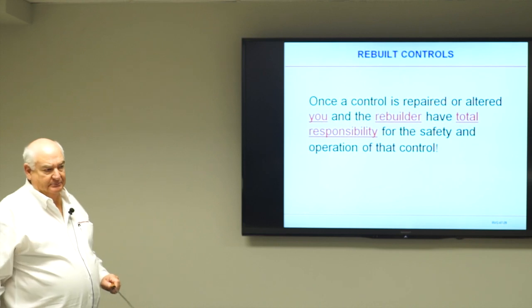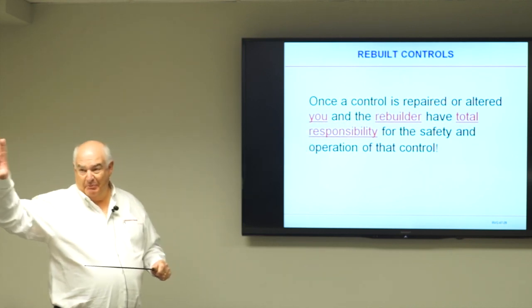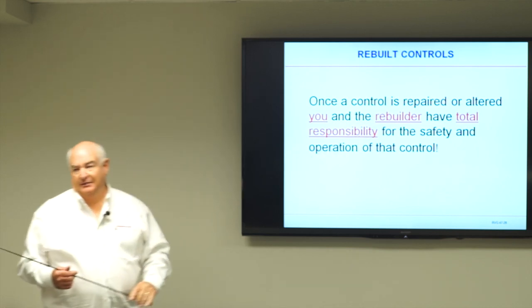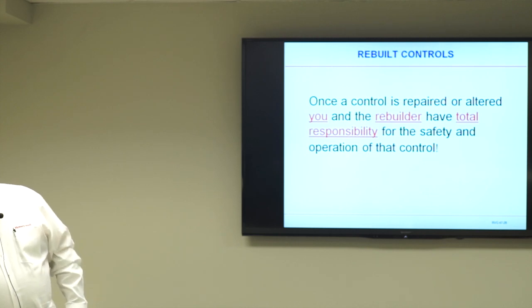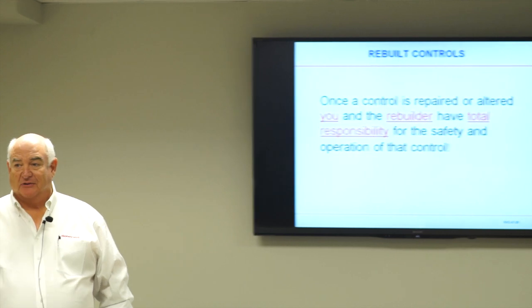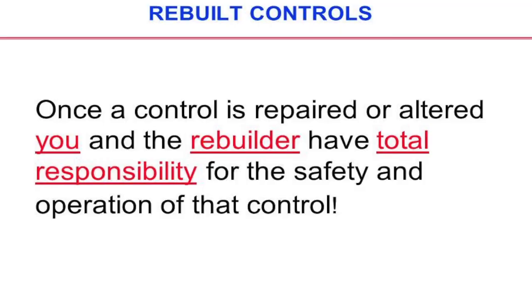We know the rebuilt control is used and probably not current design, since manufacturers change their design all the time. The code says you cannot use a rebuilt or repaired control in a commercial building like a church. The law says that once a control is repaired or altered, the owner and the rebuilder have total responsibility. If there's an incident proven to be caused by that rebuilt control, the owner and the installer are fully responsible — the insurance company has no liability.